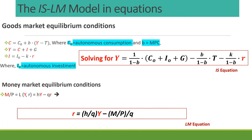Increases in the real interest rate result in a reduction in output. Therefore, the IS curve is negatively sloped. The IS equation is derived with consumption as a function of disposable income, combined with consumption, investment, and government expenditure. Investment is now modeled as a function of the real interest rate rather than being exogenous. When you derive the equation for output mathematically, it gives you a function of the real interest rate — this is known as the IS equation.